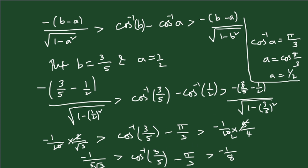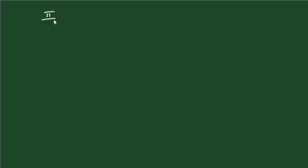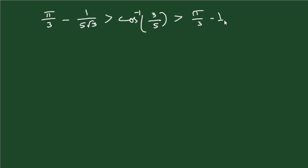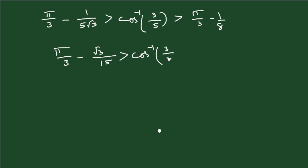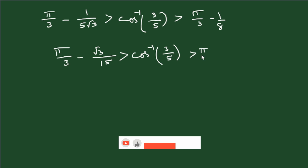Adding π/3 throughout: π/3 − 1/(5√3) > cos⁻¹(3/5) > π/3 − 1/8. Rationalising 1/(5√3) by multiplying numerator and denominator by √3 gives √3/15. So the final answer is: π/3 − √3/15 > cos⁻¹(3/5) > π/3 − 1/8, which is the required result.